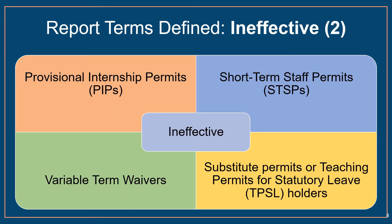An assignment monitoring outcome of INEFFECTIVE indicates that one or more relevant attributes of the assignment had no legal authorization from a permit, credential, or waiver, or one or more relevant attributes of the assignment were authorized by the following limited permits: Provisional Internship Permits (PIPs), Short-Term Staff Permits (STIPs), variable term waivers, substitute permits, or Teaching Permits for Statutory Leave (TIPSL) holders serving as the teacher of record.